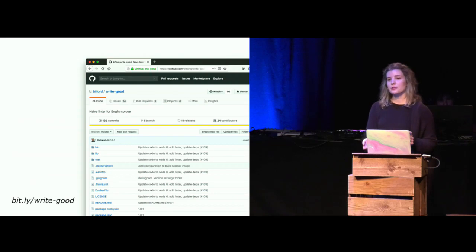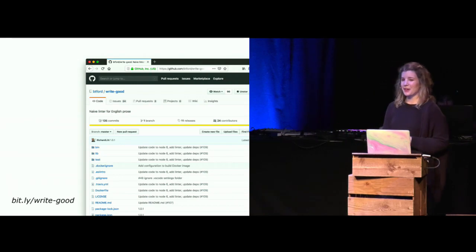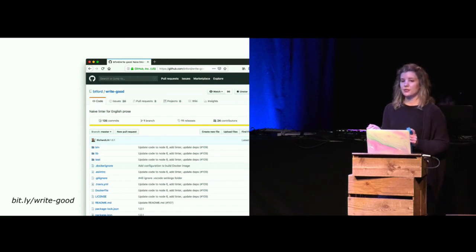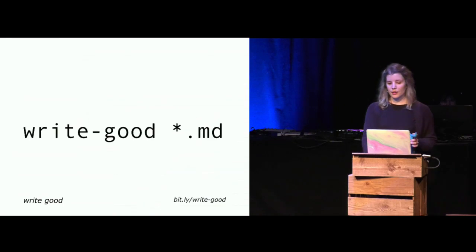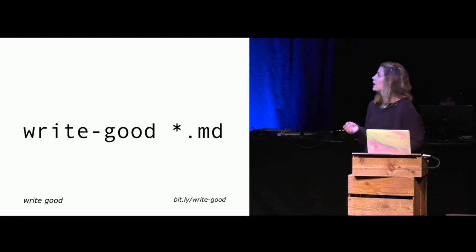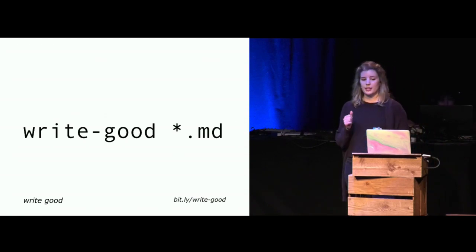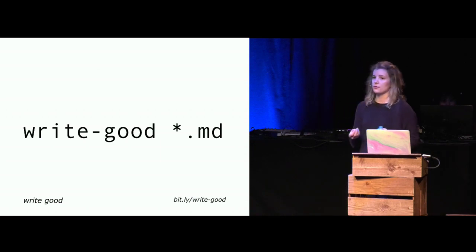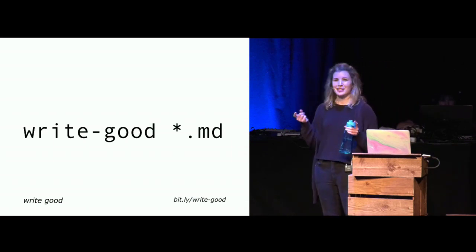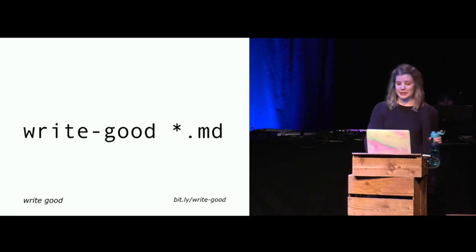If you want to enforce this rule, you can also use a different linter: write-good is another linter for English prose. It's available as a command line tool and someone recently wrote a VS Code plugin for it. Once it's installed, you can run a command to do a general check of all your markdown files. It automatically flags for words like 'simply' or 'easily', and you can write a custom check for other problematic terms that your team might use frequently.